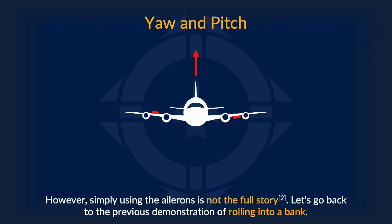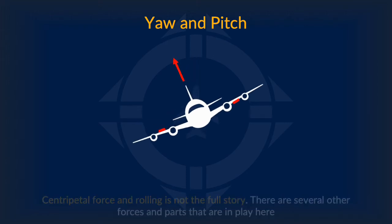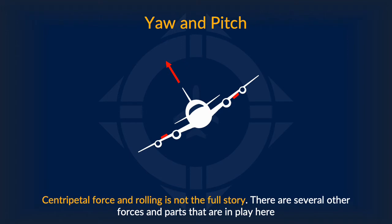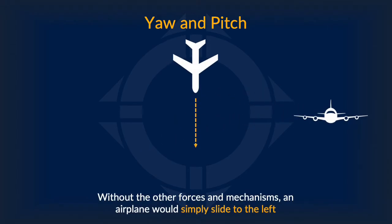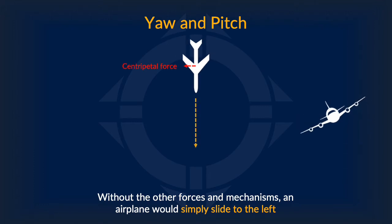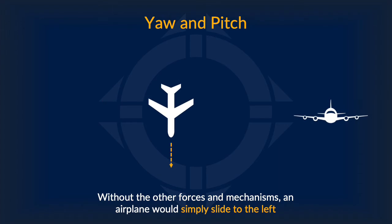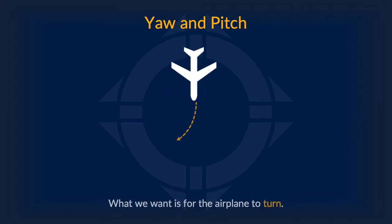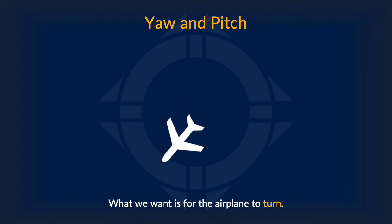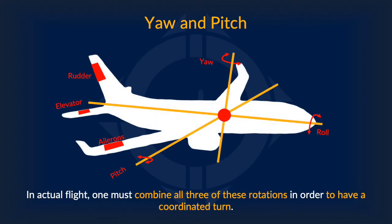However, simply using the ailerons to bank is not the full story for getting an aircraft to turn. Let's go back to the previous demonstration of rolling to see why. Centripetal force and rolling alone is not the full story — there are several other forces and parts in play. Without the other forces and mechanisms, the airplane would simply do a sort of side shuffle to the left. This is not what we want. The airplane would just go back to facing the original direction. What we really want is the airplane to turn and face a different direction.